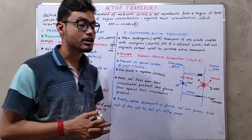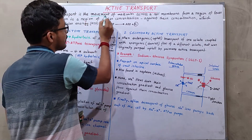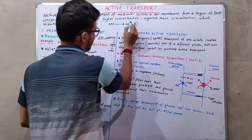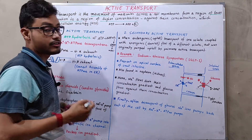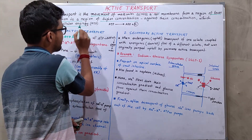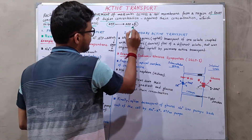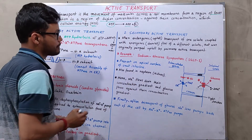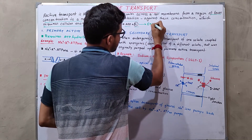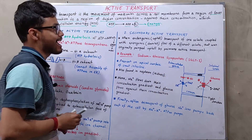In active transport, the movement of molecules occurs from lower concentration to higher concentration — against their concentration gradient — and this process requires cellular energy, that is ATP. Basically, ATP is converted into ADP and inorganic phosphate (Pi), and that energy is used for active transport.